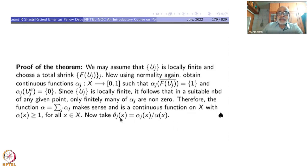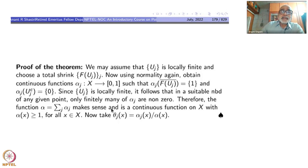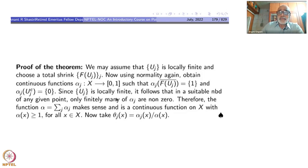Now set θ_j(x) = α_j(x) / α(x). Since α is a continuous function that is never 0, 1/α is also continuous, so θ_j is continuous. Then Σ θ_j = Σ α_j / α(x) = 1. The zeros of θ_j are the same as the zeros of α_j, so the support of θ_j is contained inside the corresponding U_j. Thus the proof of partition of unity is complete — the major work went into proving the shrinking lemma.